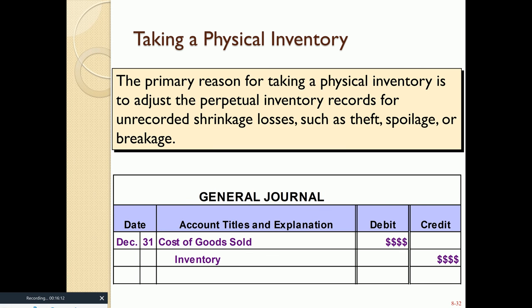Even with a perpetual inventory system, we still physically count inventory at the end of every accounting period — at least once a year. This is because things break, get stolen, get lost, or spoil. These losses are called shrinkage. The difference between inventory on the balance sheet and the physical count is recorded as additional cost of goods sold by debiting cost of goods sold and crediting inventory, getting the balance sheet in line with what's physically in the warehouse.